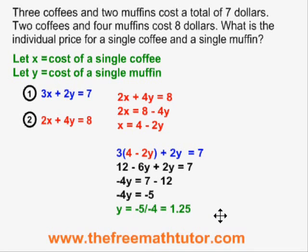And therefore, y is equal to negative 5 over negative 4, which simplifies to 1.25.